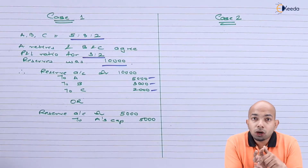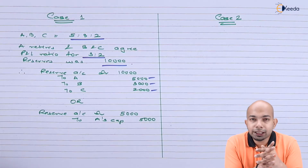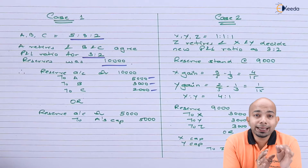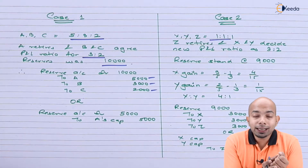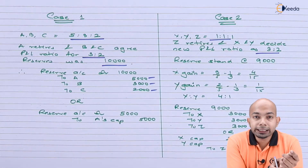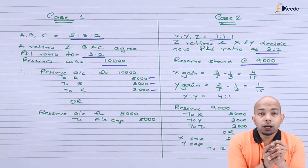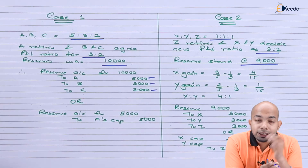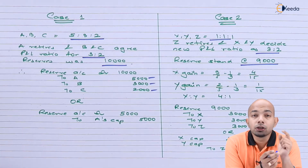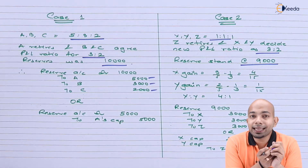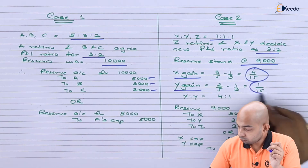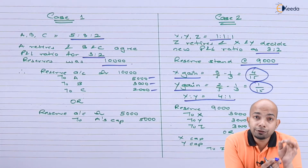Case 2: X, Y, and Z share profits and losses in the ratio of 1:1:1. Z retires, and X and Y decide to keep the profit sharing ratio as 3:2. The reserve stands at 9,000. Since the new ratio 3:2 differs from the original 1:1, we must first calculate the gaining ratio for the continuing partners X and Y. The gain for X is 4/15 and for Y is 1/15, giving a gaining ratio of 4:1.